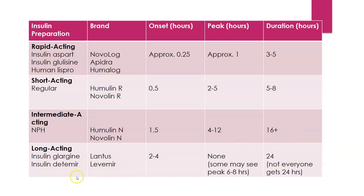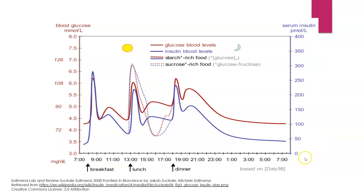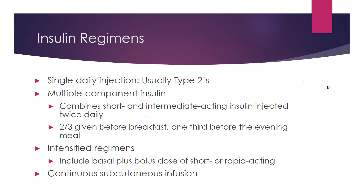A unique one is insulin glargine. Your onset is two to four hours, but you're really not supposed to have a peak with this one. It does last for about 24 hours, though it depends on the person — some might see a peak, but most do not, and some will fall a little less than 24 hours depending on how they're reacting to the medication. You want to time your insulin with food so that the peak aligns with your sugar load from meals, and you can see the peaks and troughs related to sugar, insulin, starches, and sucrose.